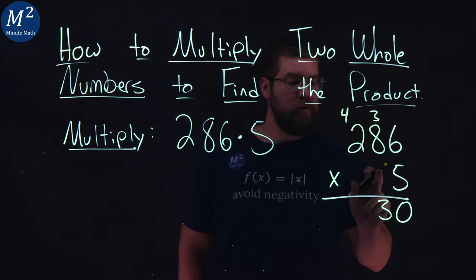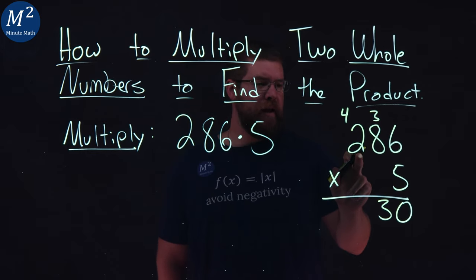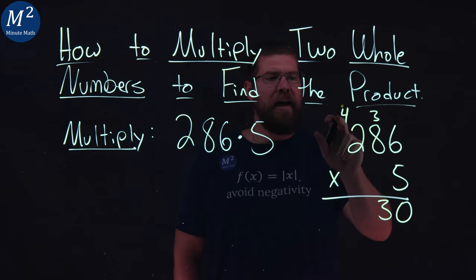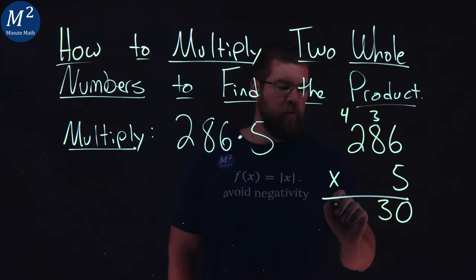Then 5 times 2, last one here, multiply that out. 5 times 2 is 10, add 4 to that, and we get 14.